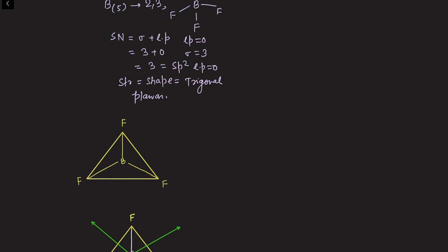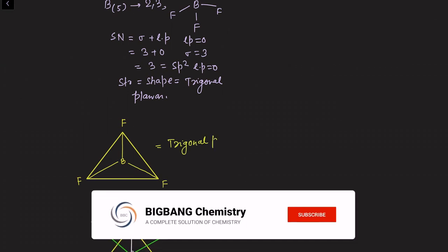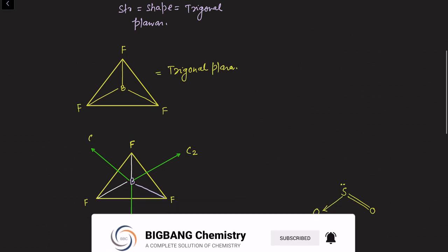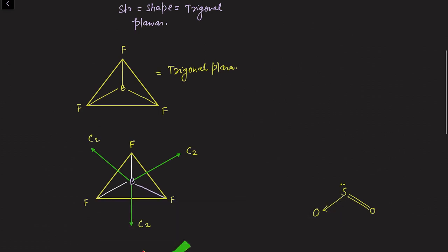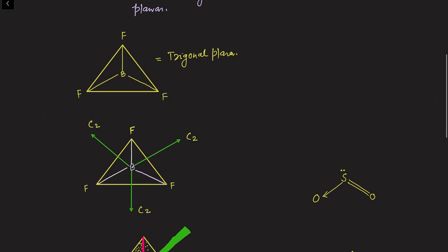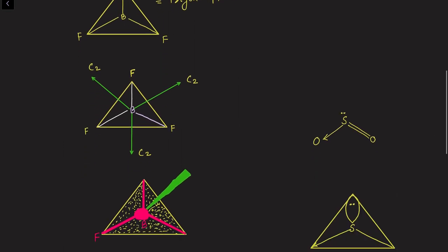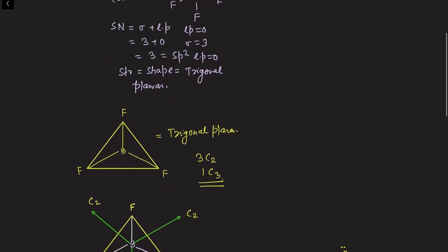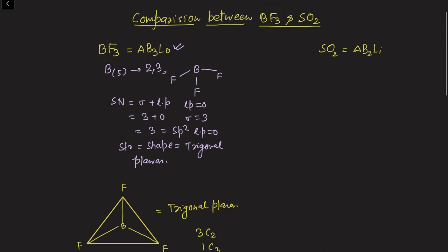The structure of BF3 is trigonal planar. In this molecule, three C2 axes are present — we discussed how to perform the C2 operation in lecture numbers 13, 14, and 15. Additionally, one C3 proper axis of rotation is present. So in BF3: 3 C2 axes and 1 C3 axis.